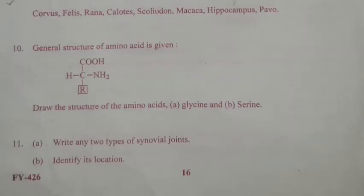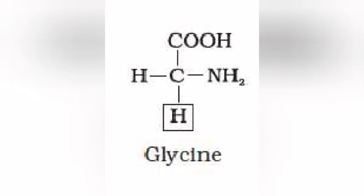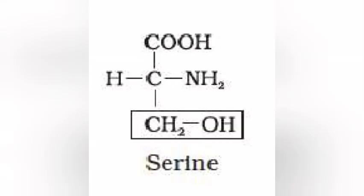Question 20: General structure of amino acids is given below. Draw the structure of the amino acids. A. Glycine and B. Serine. Answer: A. Glycine structure drawn. B. Serine structure drawn.